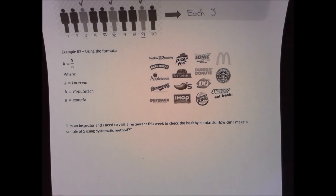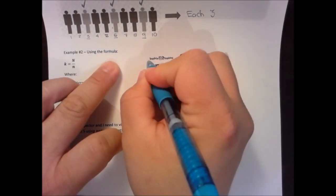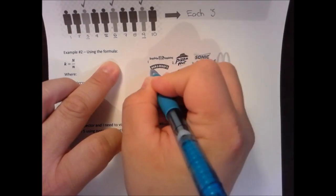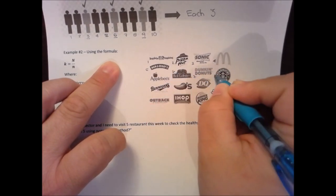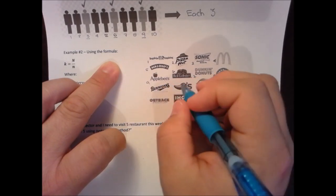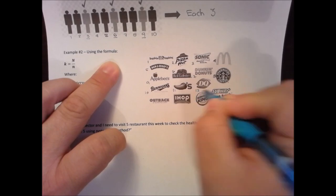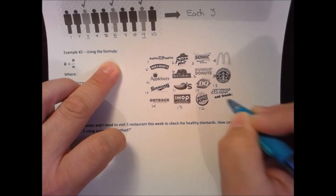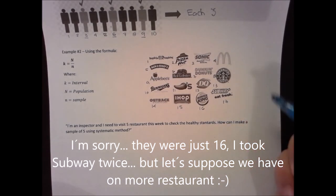The first thing you need to do is label each restaurant: 1, 2, 3, 4, 5, 6, 7, 8, 9, 10, 11, 12, 13, 14, 15, 16, and 17. We have 17 different restaurants.